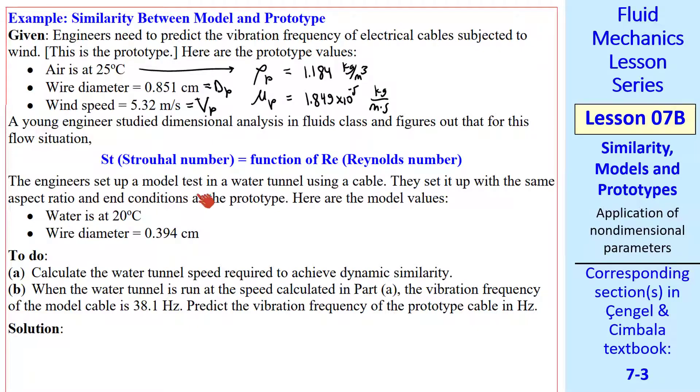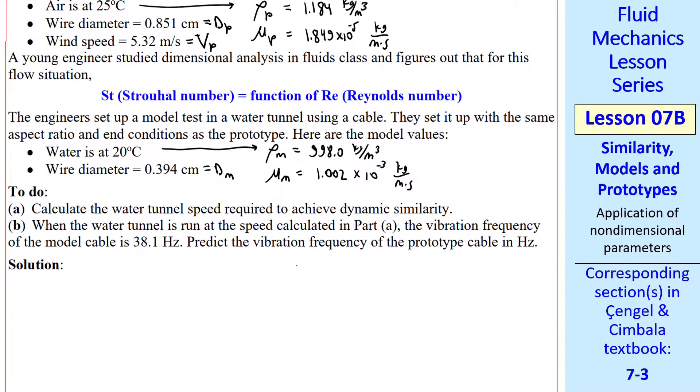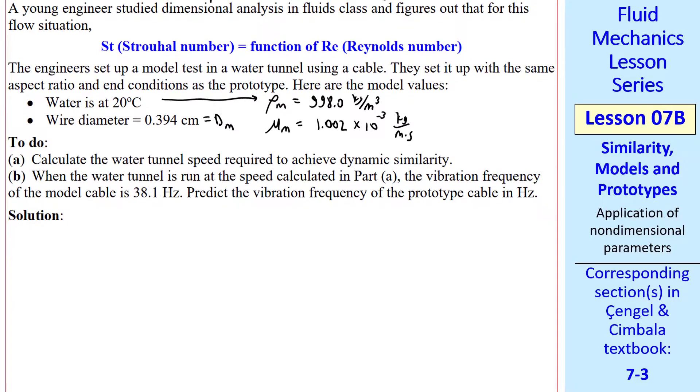So the engineers set up a model test in a water tunnel using a different cable. They make sure they have the same aspect ratio and end conditions, so they get similar vibration. And here are the model values. Water is at 20 degrees C, so rho M is 998.0 kg per meter cubed, and mu of the model is also known from tables. And we call this diameter DM. Subscript M, of course, means model.